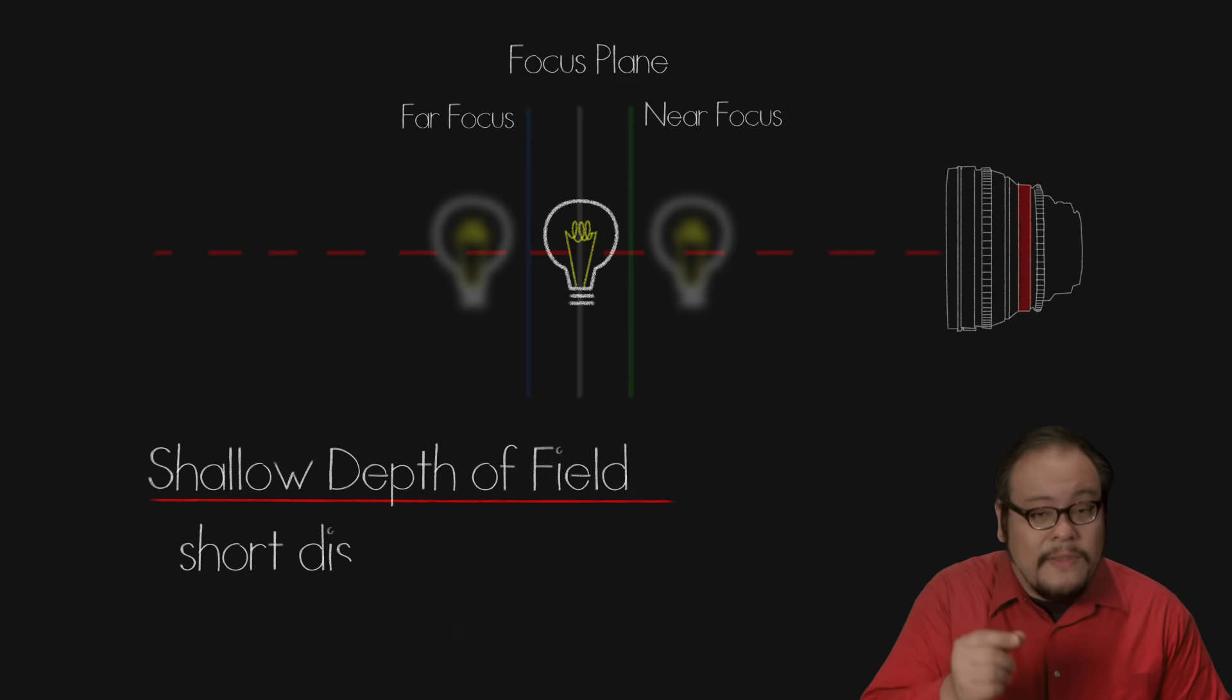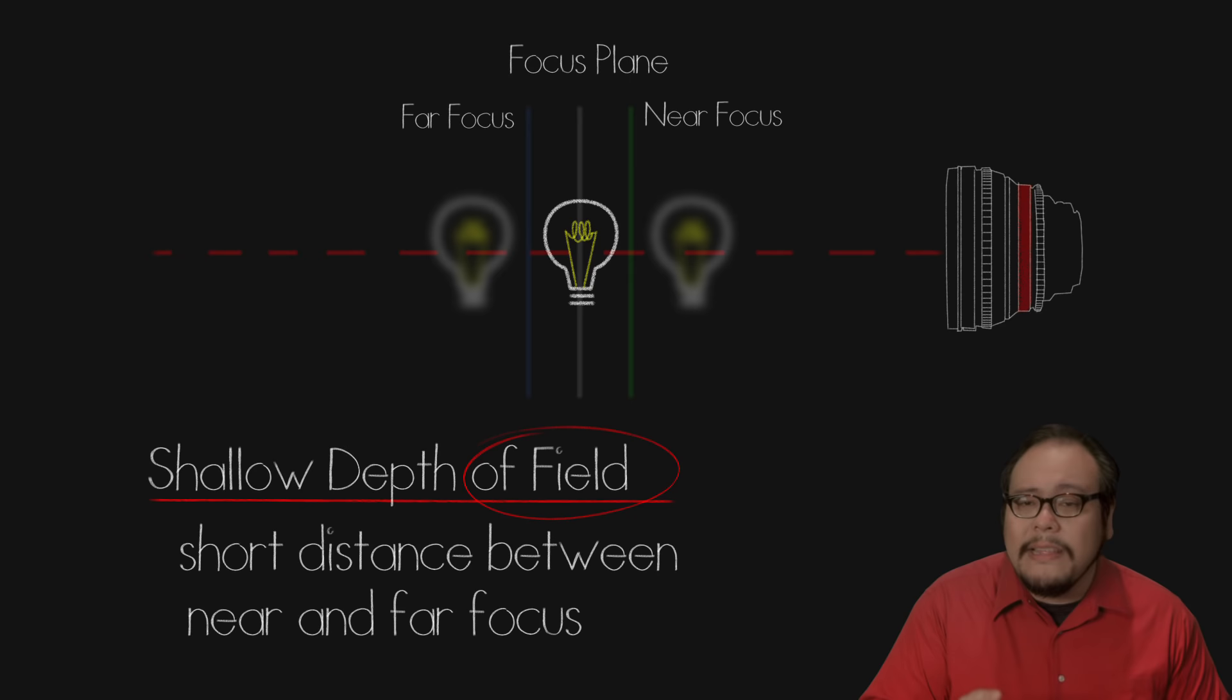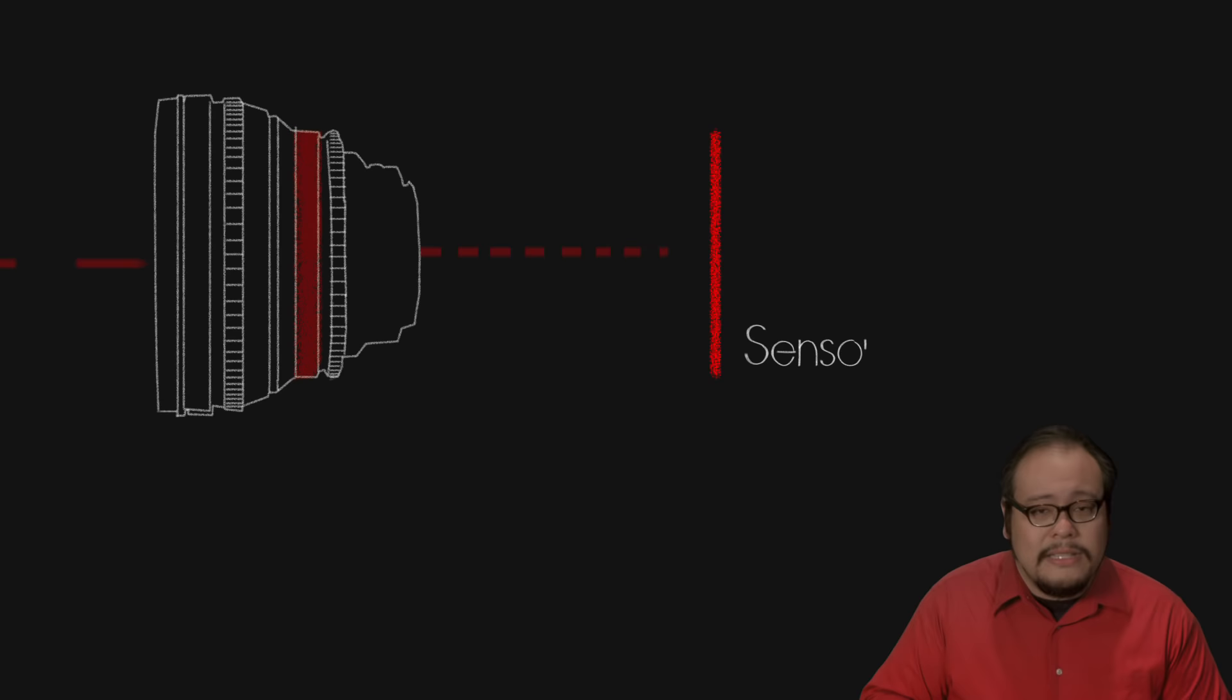Notice how we said acceptably sharp. We'll cover that more deeply in a bit. Also note that the terminology is depth of field, not depth of focus. Depth of focus refers to the space you have to move behind the lens. Unless you're working with a camera with back focus settings, you will not be using depth of focus.